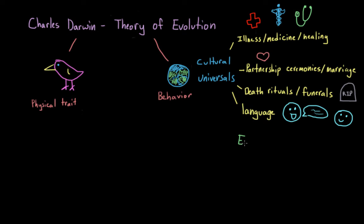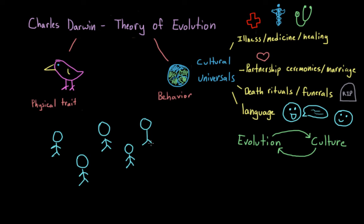So these are examples of how evolution can shape culture, but we can also think about how culture might shape human evolution. So think about the transitions from humans as a hunter-gatherer society to one in which crops are planted and raised and animals are domesticated, about 10,000 years ago.